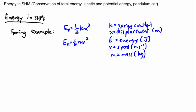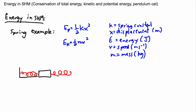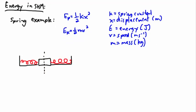Before we get into the formulas, it's really important to actually look at a spring itself. Let's look at this same spring example undergoing simple harmonic motion — a mass with two springs attached to walls, sitting on a surface, free to go left and right. Whenever I'm looking at a complicated simple harmonic motion question, I think of it this way and it really helps me out.